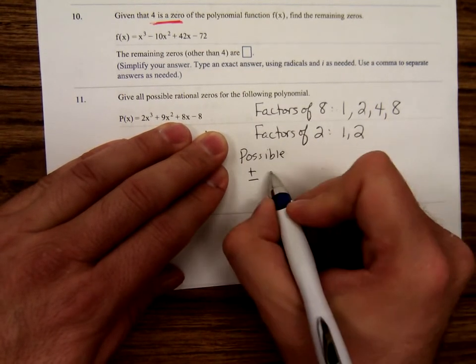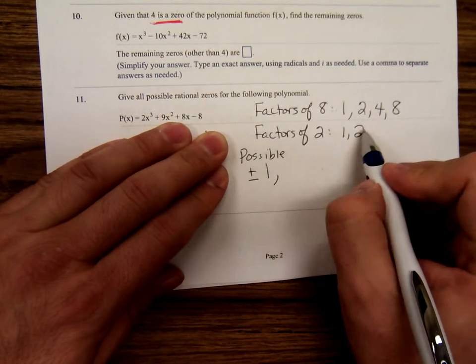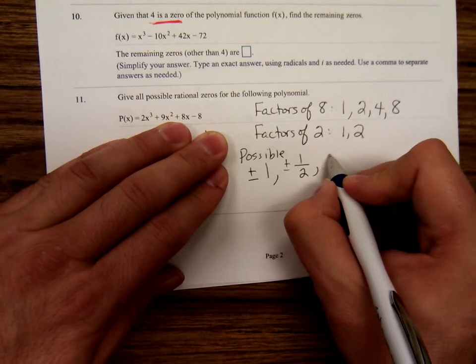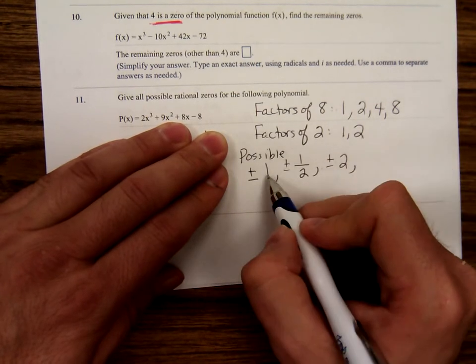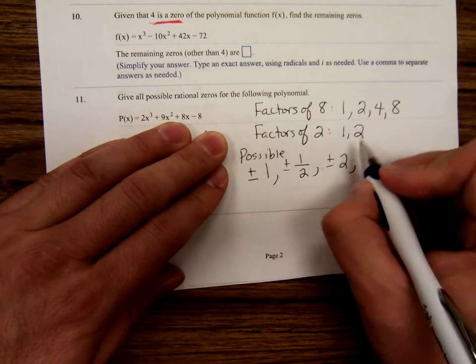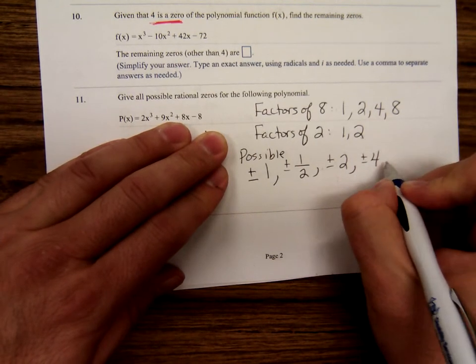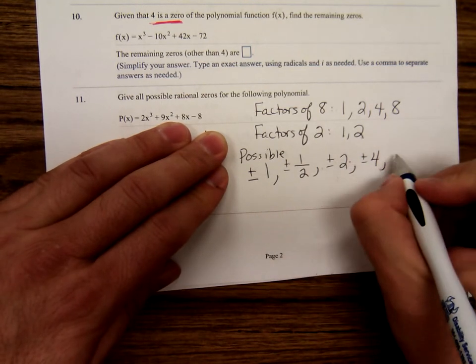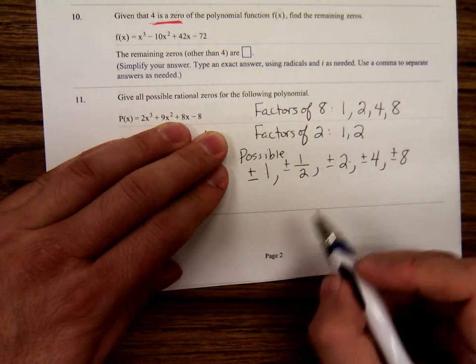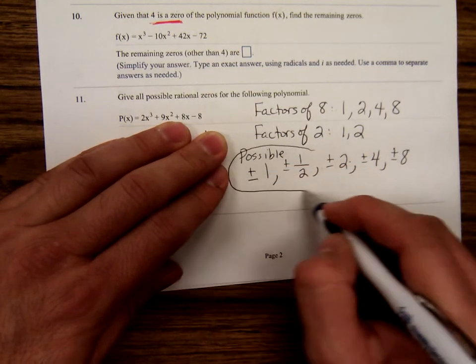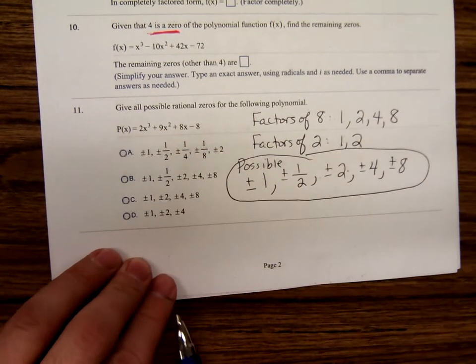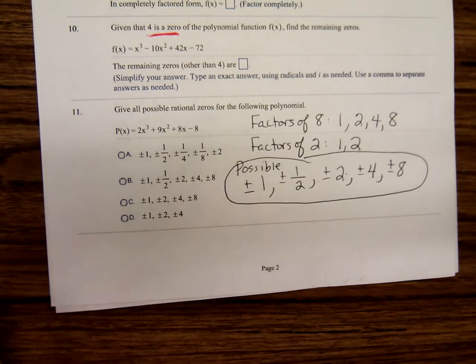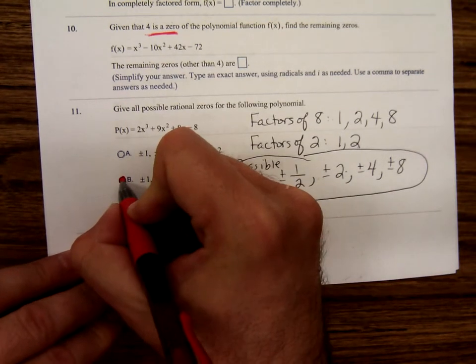Plus minus these numbers over those, so 1 over 1, 1 over 2, 2 over 1, 2 over 2 we've listed, 4 over 1, 4 over 2 we've listed, 8 over 1, 8 over 2 we've listed, so they're all the possible, and I may not have them in the same order that's listed here, yeah I do, it's B.